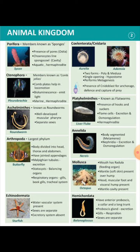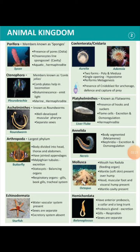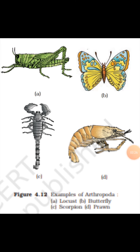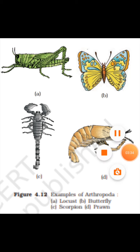Regarding the respiratory system, gills and the tracheal system are developed. There are some examples of arthropods: locust, butterfly, scorpion, and prawn — these are all arthropods.